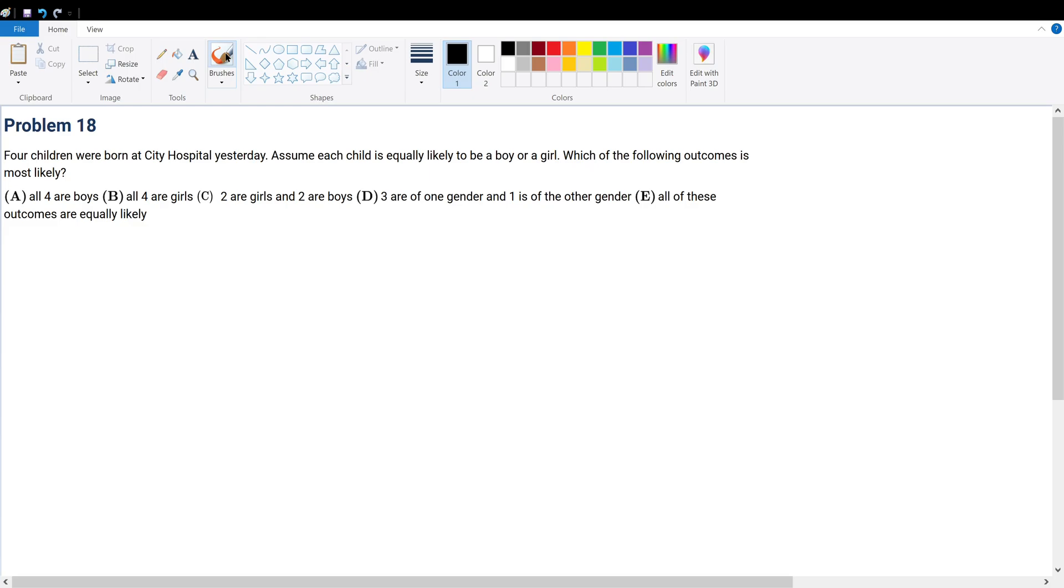Problem 8. Four children were born at a city hospital yesterday. Assume each child is equally likely to be a boy or a girl. So every probability is going to be half and half.